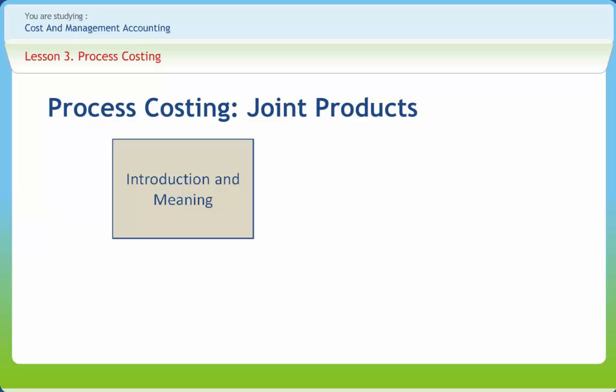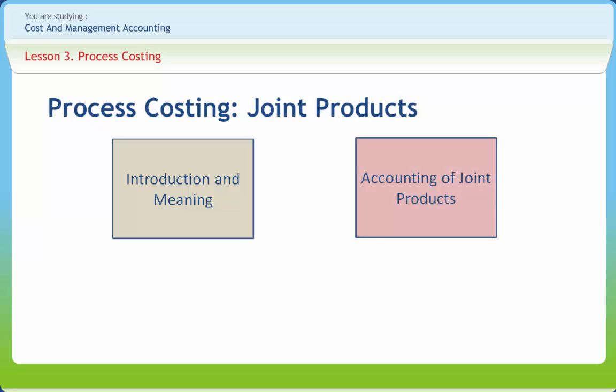There are certain processes which normally yield two or more products of equal importance, known as joint products. Joint products are defined as two or more products separated in the course of the same processing operation, usually requiring further processing, with each product in such proportion that no single product can be designated as a major product. The cost of joint products is determined by apportioning the cost of production at the point of separation. The determination of profit or loss of every joint product is very difficult due to lack of distinctiveness.